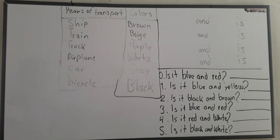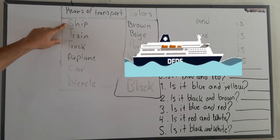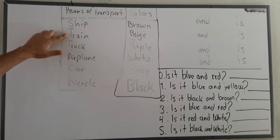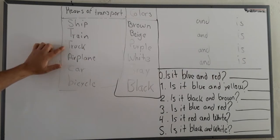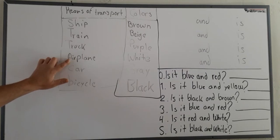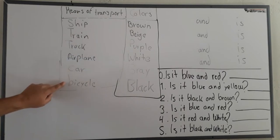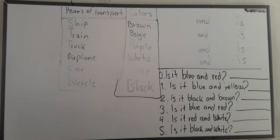So, let's start over. Means of transport. Ship. Train. Truck. Airplane. Car. Bicycle. Yes, very good. Good kids. Very good.